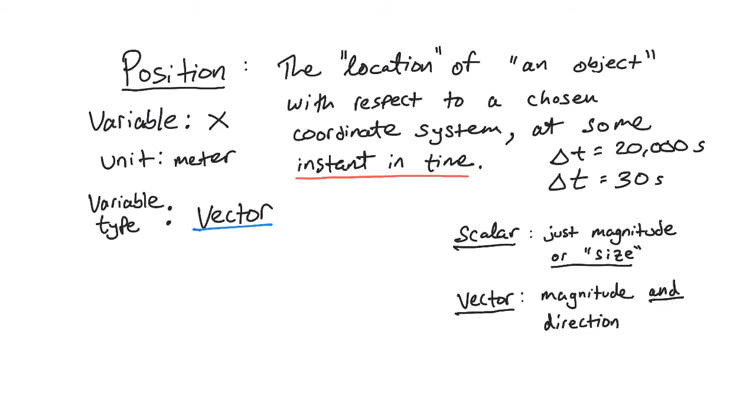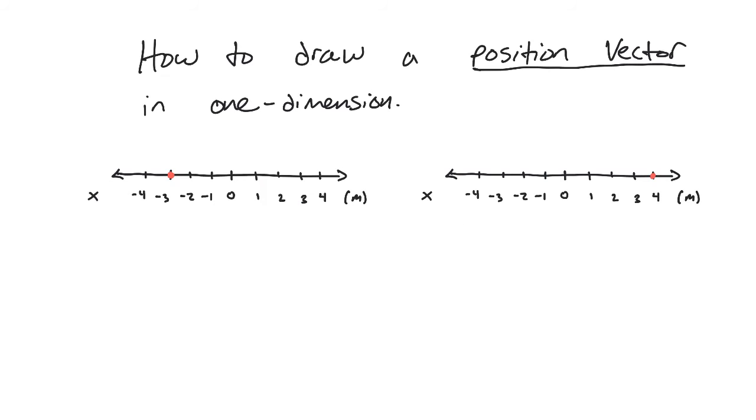So let's wrap this video up here by teaching you how to draw what's called the position vector in one dimension. All right, so doing this is pretty straightforward. Step one, draw a coordinate system. So I've got two of them drawn here because we're going to do two of these. But here's a coordinate system in one dimension. We have a positive direction and a negative direction. So that's step one.